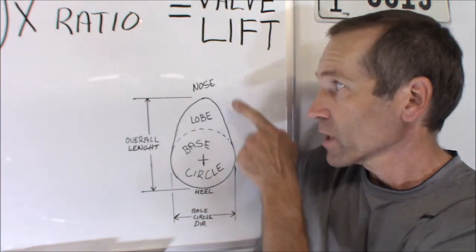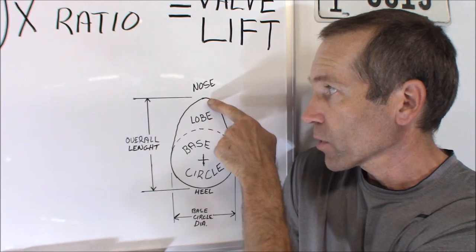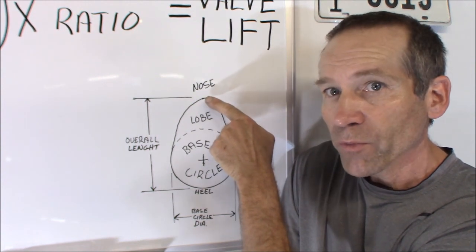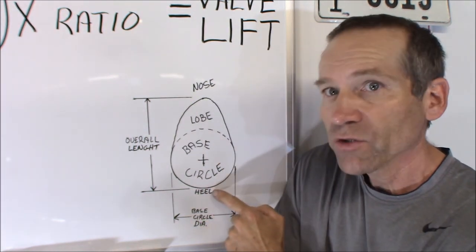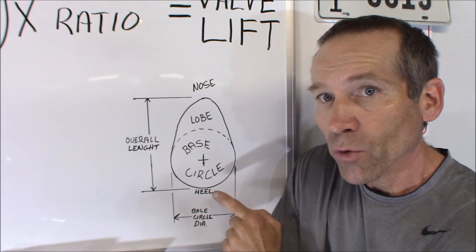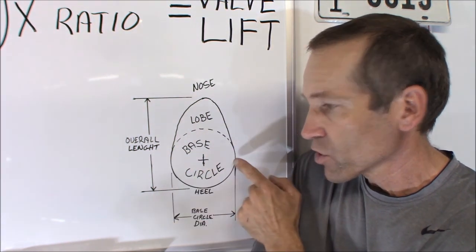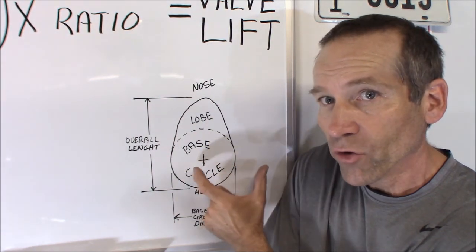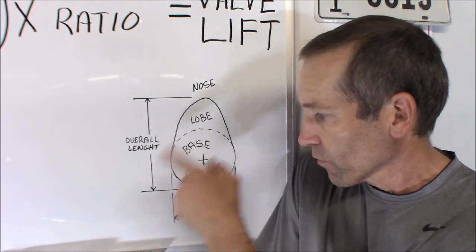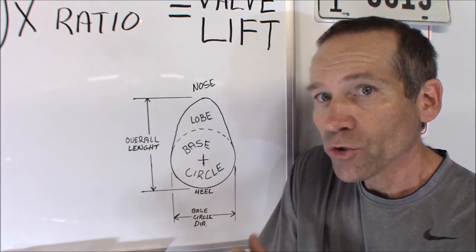Like I explained, so we're going to take our micrometer or dial caliper, in this case, measure from the nose to the heel side of the lobe, record that measurement. Then you're going to measure from across here the base circle of that. And the sum of those two, we're going to subtract.